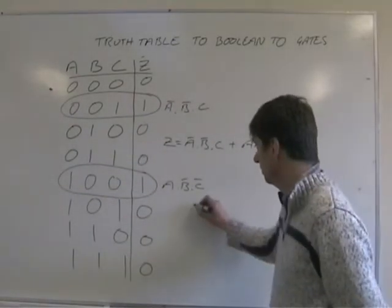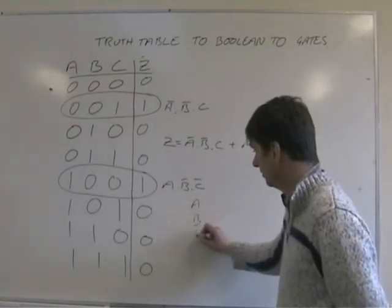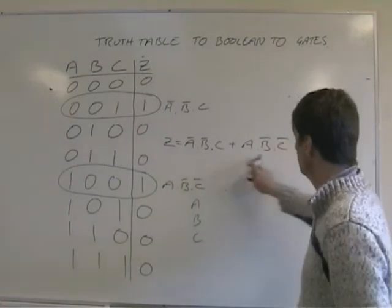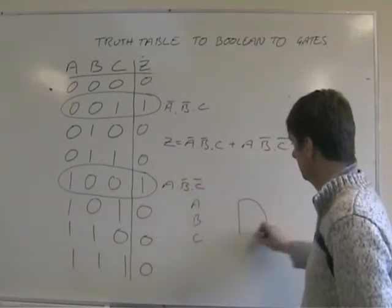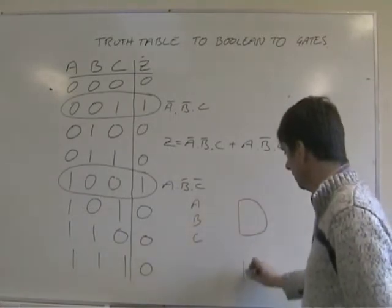So we have our three inputs. A, B and C. We have these two terms. So this term needs an AND gate. This term also needs an AND gate.